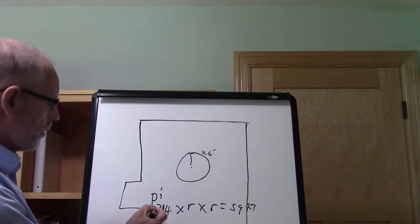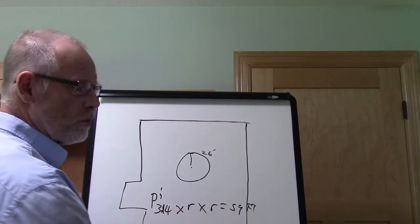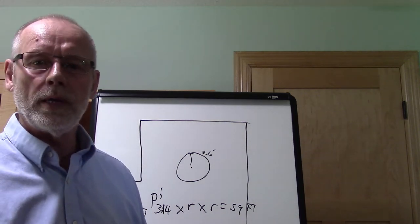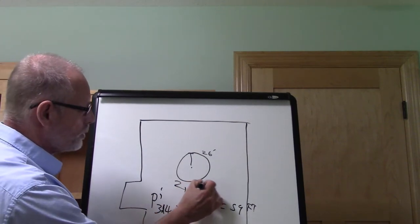Now all we have to do is take 3.14 times 26 times 26 equals the square footage. In this case, it ends up being 2,122 square feet. That's what we have here, 2,122 square feet.